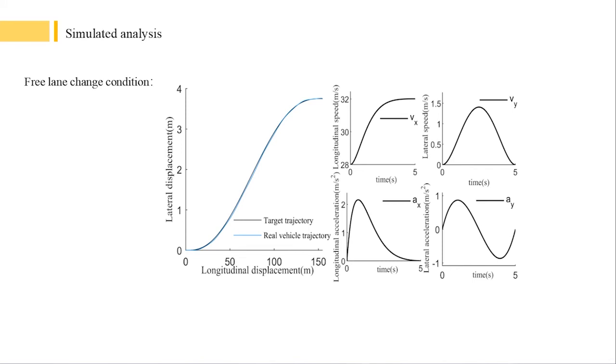The longitudinal velocity was increased from 28 meters per second to 32 meters per second. During the lane change process, the longitudinal velocity curve did not fluctuate repeatedly, which would not bring longitudinal compression force to passengers. The maximum lateral acceleration is 0.87 meters per second.